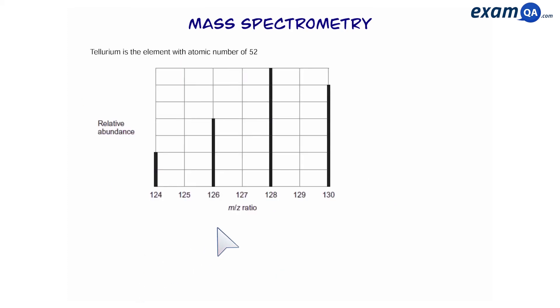Let's try another question. Here we have a mass spectrum of Tellurium and this is what we can see from the periodic table. The mass spectrum of Tellurium has a small peak at m/z 64. Explain the existence of this peak.